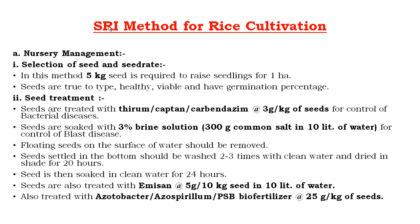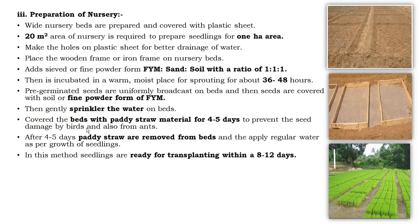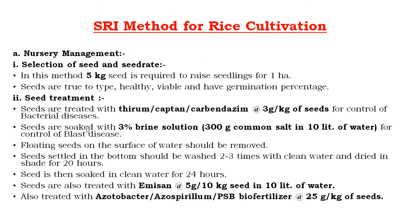Now we look at how rice is cultivated in the SRI method. First, nursery management: selection of seed and seed rate, seed treatment, preparation of nursery, and preparation of field. In SRI, 5 kg seed is required to raise seedlings for one hectare, while conventional requires 60 to 100 kg per hectare. Seeds should be true-to-type, healthy, viable, and have high germination percentage.